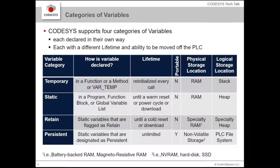Codesys has four different categories of variables. You've got your temporary variables — these are based on the stack. These are the variables that are created when you call a function or a method. They're temporary — they only live long enough for that call and then they go away.